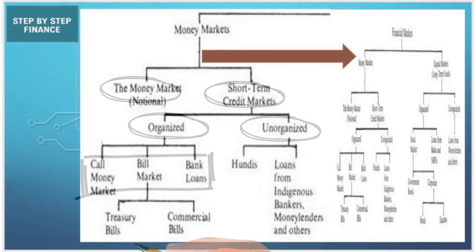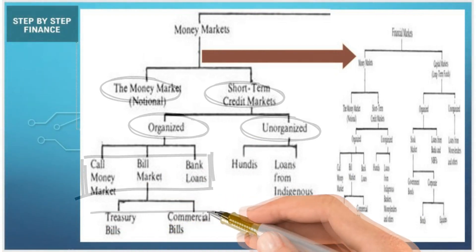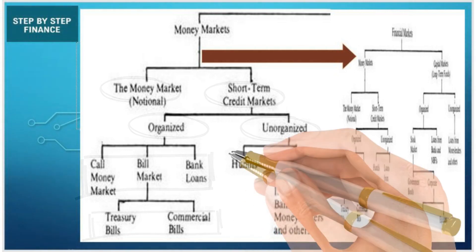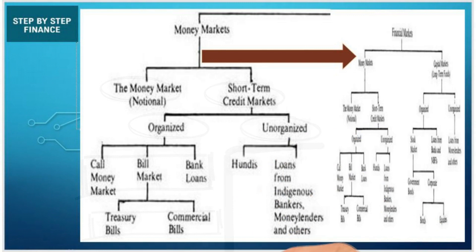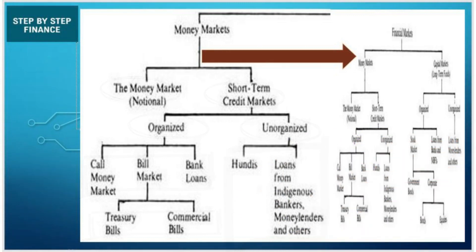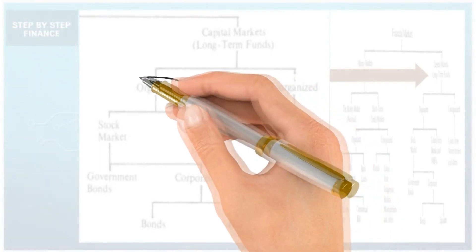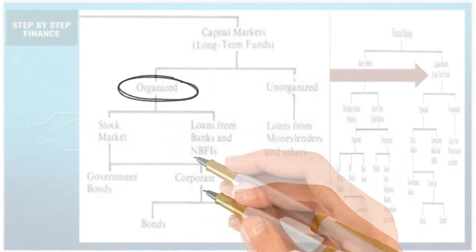The bill market is divided into two parts: Treasury bills and commercial bills. Now, the unorganized market has two parts: Hundis, and loans from indigenous banks, money lenders, and others.